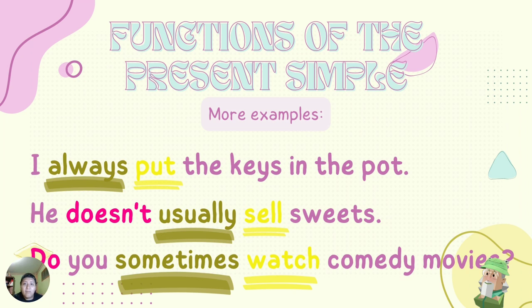Here we have more examples. I always put the case in the pot — 'put' is the verb in present simple and 'always' is a frequency adverb. He doesn't usually sell sweets — 'sell' is the verb in present simple, 'usually' is a frequency adverb, and 'doesn't' is an auxiliary verb. Do you sometimes watch comedy movies? 'Watch' is the verb in present simple, 'sometimes' is the frequency adverb, and 'do' is the auxiliary verb.